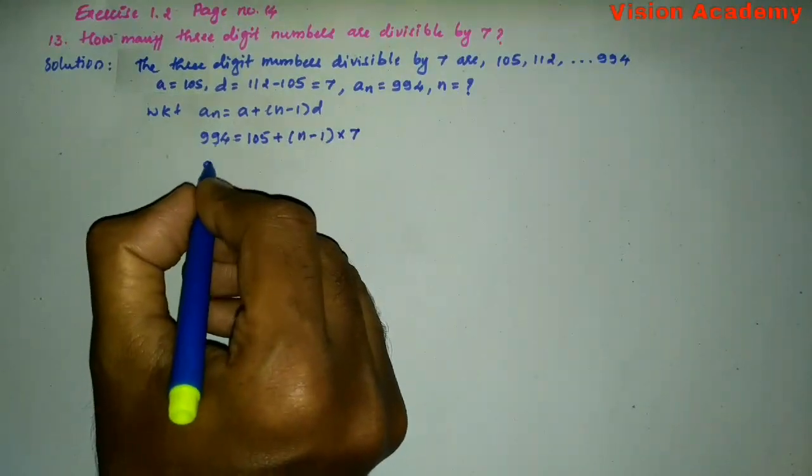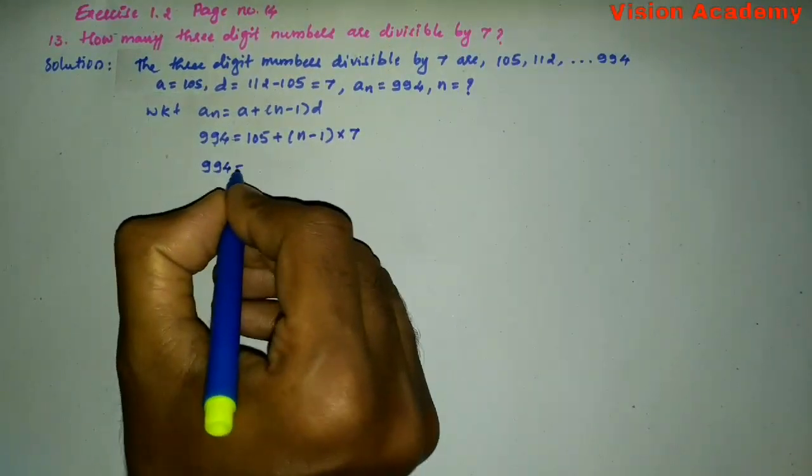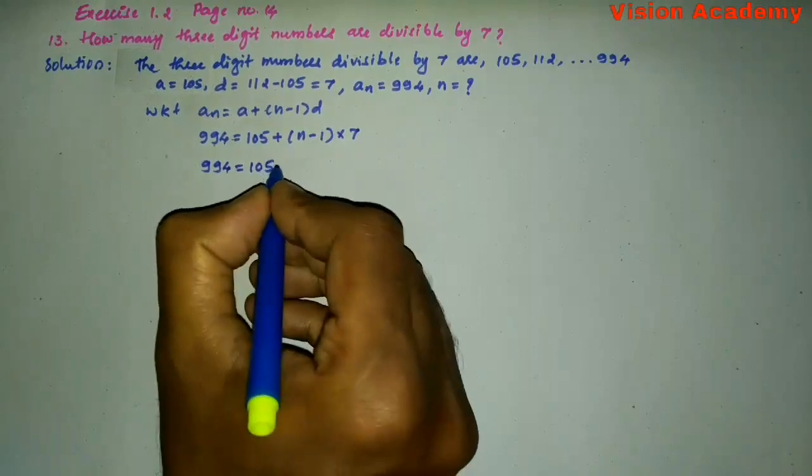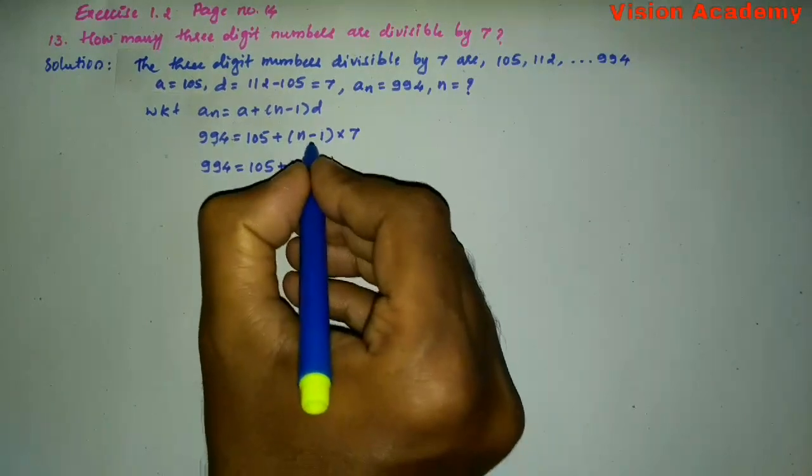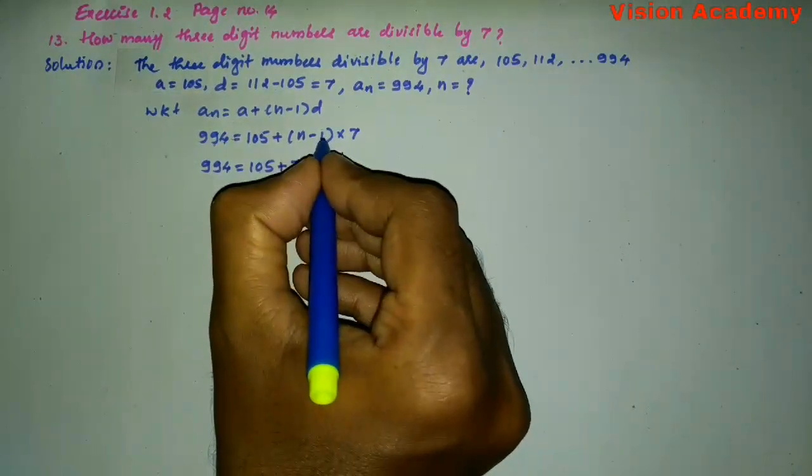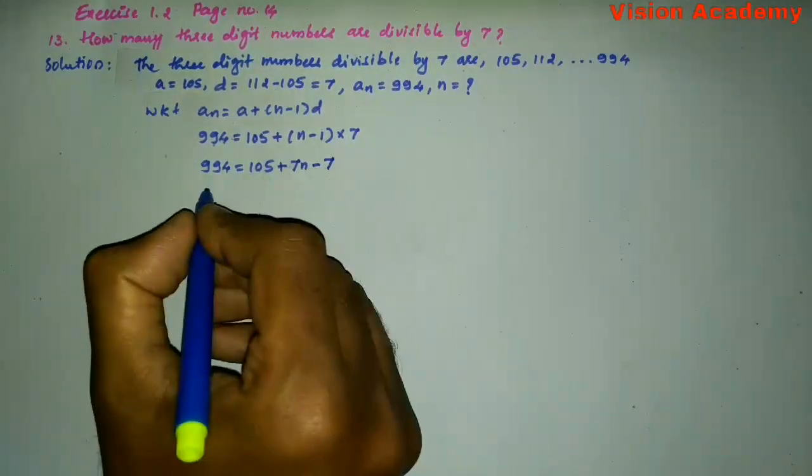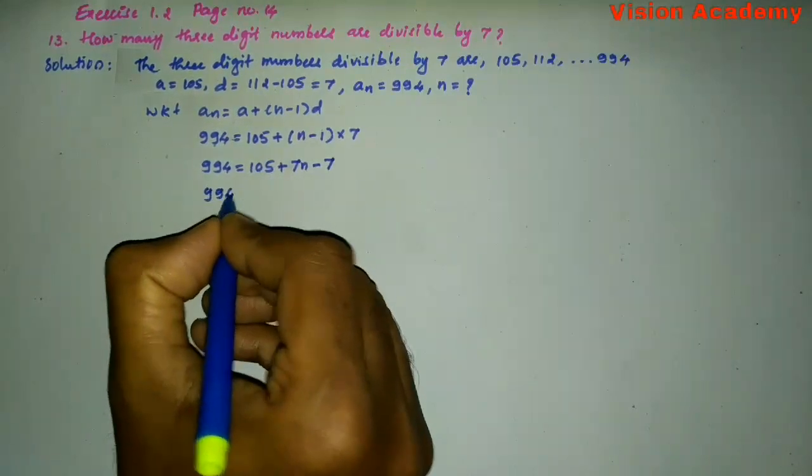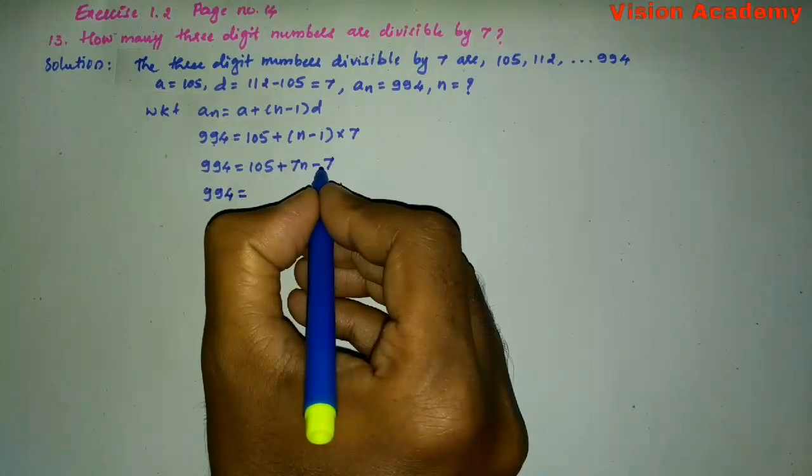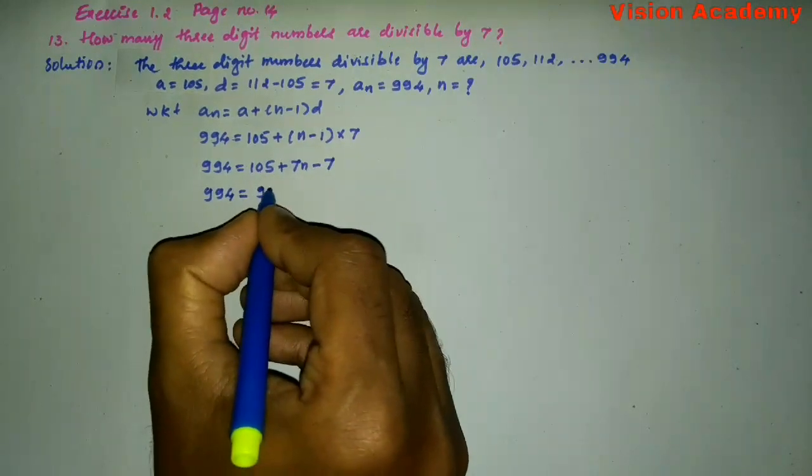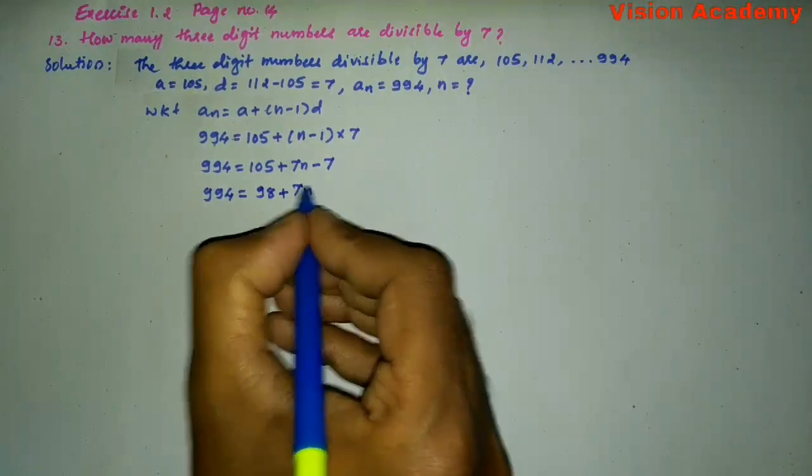Let us simplify. 994 = 105 + 7N - 7, so 994 = 105 - 7 + 7N = 98 + 7N.